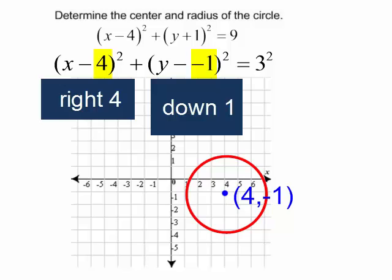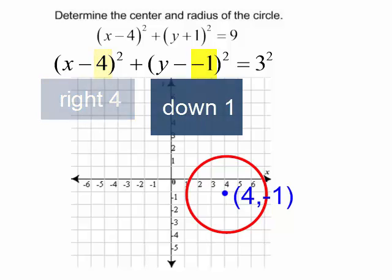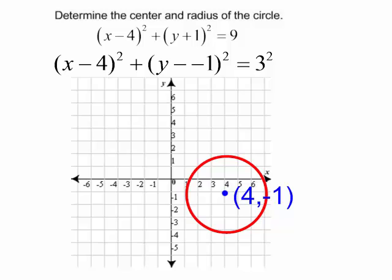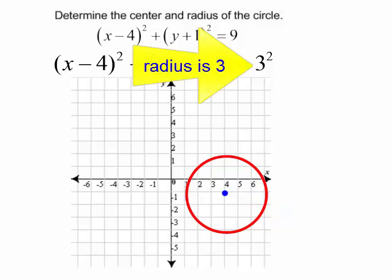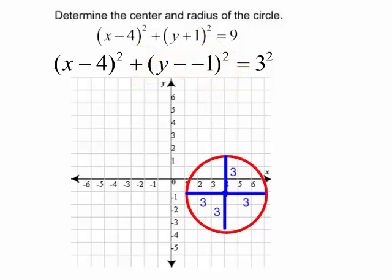The center of my circle is (4, -1). From the center the radius is 3. So from the center I will go left 3, up 3, to the right 3, and down 3 in order to graph my circle.